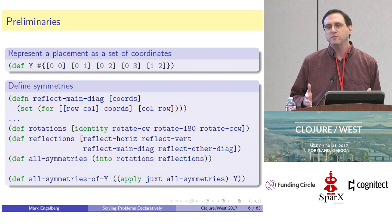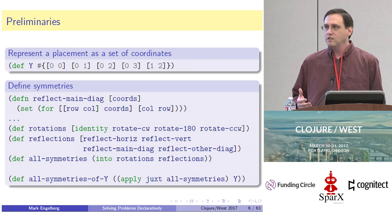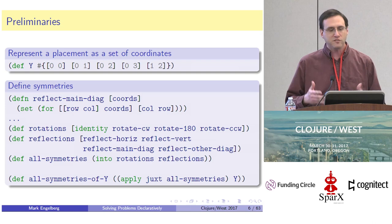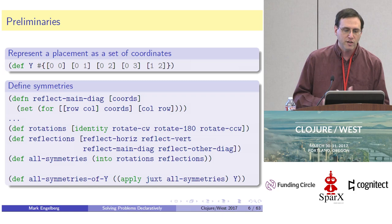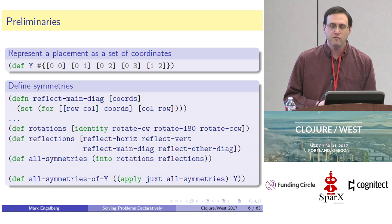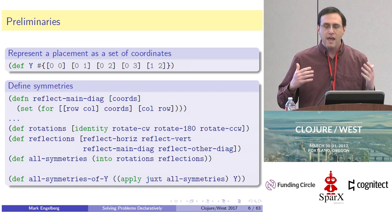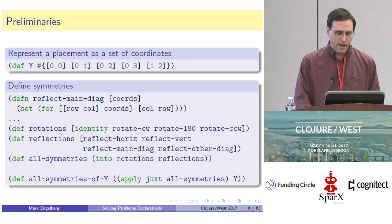If we're going to try to write a program to solve this, we need some kind of data structure to represent a Y piece in a given placement on the grid. I've chosen to represent Y as a set of row-column coordinates, zero-based from the upper left corner of the grid. I've defined the basic Y shape, and the next step is to define all the symmetries — all four rotational symmetries and the four reflection symmetries — and then apply them all to the basic Y shape, giving us all eight forms of Y.